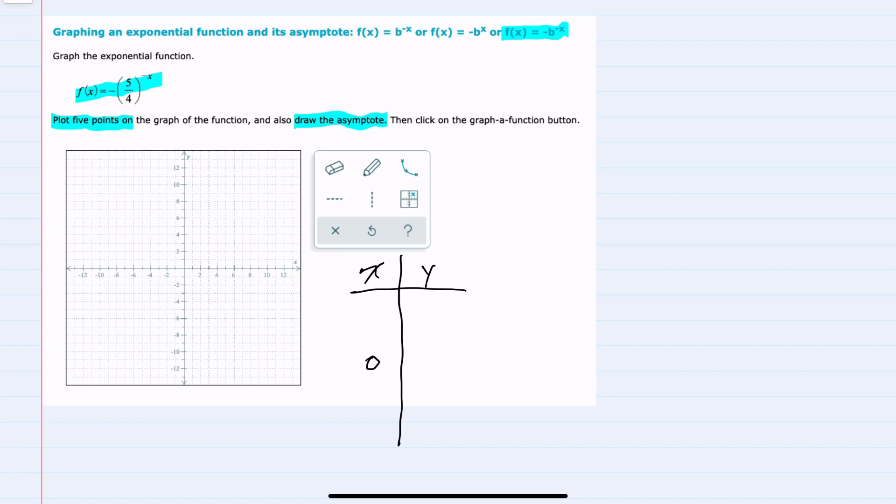I like to start with zero. If I replace x with zero, we would have our five-fourths raised to the zero power. Following our order of operations, we would want to resolve any exponents first. So leaving that negative on the outside, the five-fourths raised to the zero power would just be one. The opposite of that being negative one, we would start with the point zero, negative one.